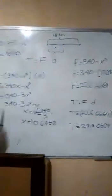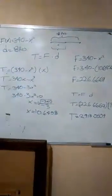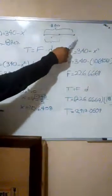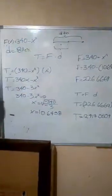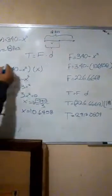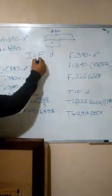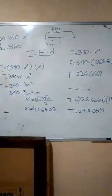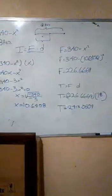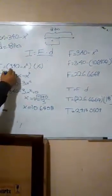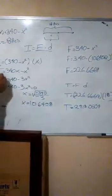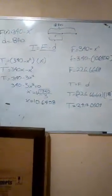F(x) es igual a 340 menos x cuadrada y la distancia es igual a 18 pies. Entonces tenemos una distancia de 18 pies en la cual el punto de partida hacia una distancia está dada a la letra X. Queriendo averiguar el trabajo, tenemos que la resultante de multiplicar fuerza por distancia. Efectuamos dicha multiplicación sustituyendo los valores: 340 menos X al cuadrado por la distancia que es X, teniendo como resultado 340x menos X al cuadrado.